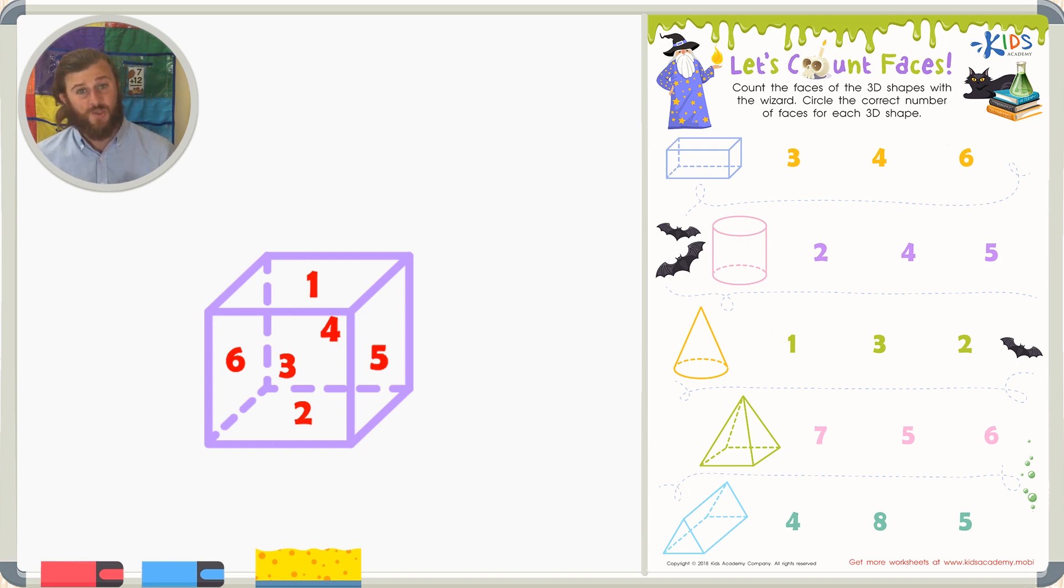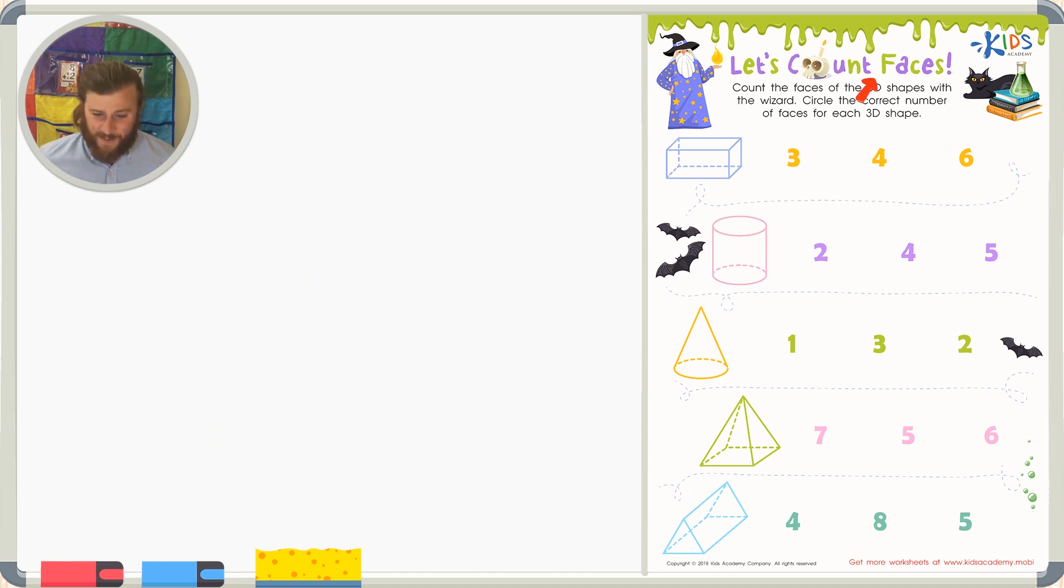Now, let's use our imagination strategy for counting the faces for our other shapes. Let's read the directions and get started right away. Let's count faces. Count the faces of the 3D shapes with the wizard. Circle the correct number of faces for each 3D shape. Okay, let's take a look at our first 3D shape, the rectangular prism.